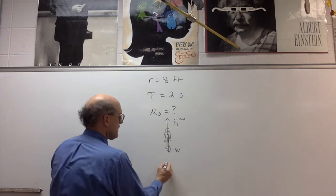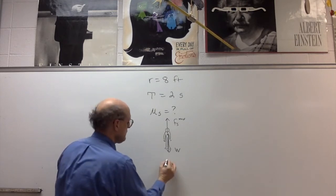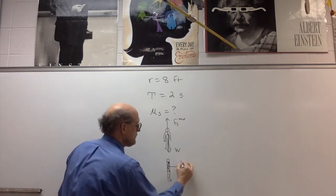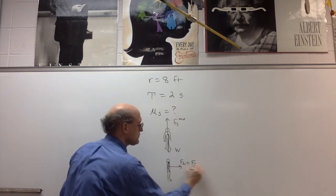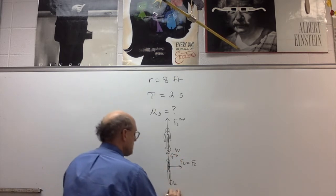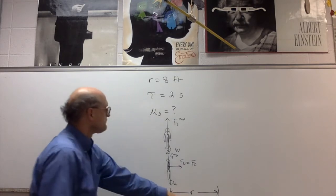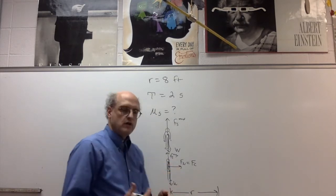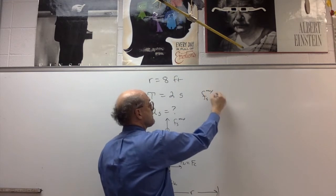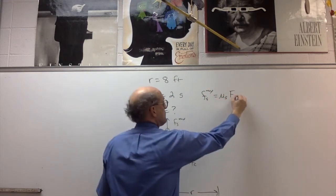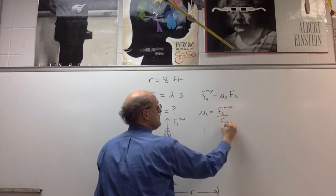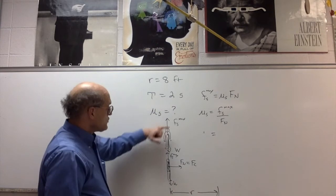I'm going to draw another free body diagram showing a side view of the person, so that I can introduce the normal force which provides the necessary centripetal force. You have the weight down and the maximum force of static friction, and I'll show the radius r.